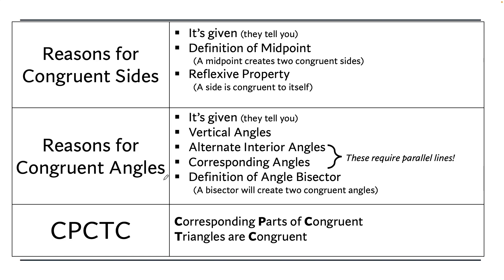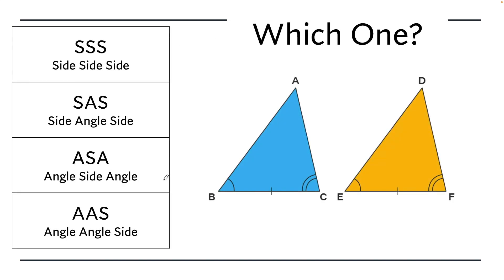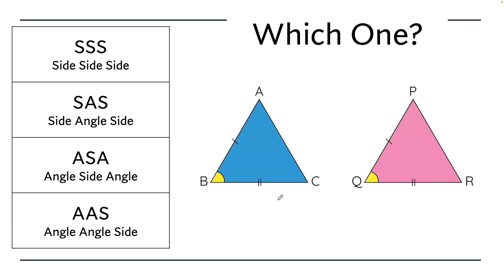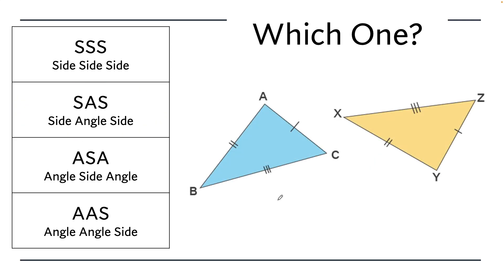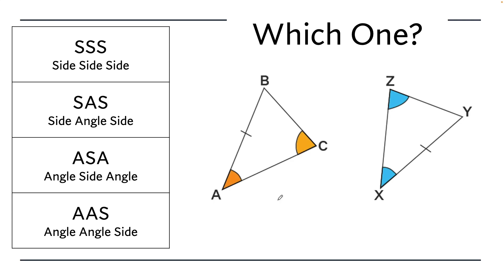Let's do a quick speed round on recognizing which shortcut to use. We've got two angles and a side between them — that's angle-side-angle. This one has two sides and an angle between them — side-angle-side. This one has three sets of congruent sides — side-side-side. And this one has two angles and the side not between them — angle-angle-side.